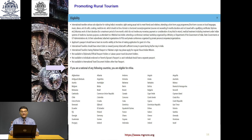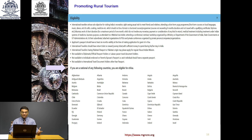What are the eligibility criteria for international travelers? Nationals of listed countries are eligible for E-Visa. The applicant's passport should have at least six months validity. International travelers should have a return ticket or onward journey ticket. International travelers having a Pakistani passport or of Pakistani origin are not applicable — they should go to the Indian mission. E-Visa is not available to diplomatic or official passport holders, not available to individuals endorsed on a parent's or spouse's passport, and not available to international travel document holders other than the passport.